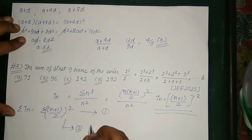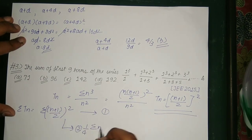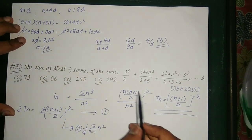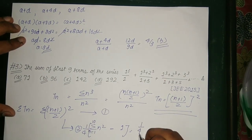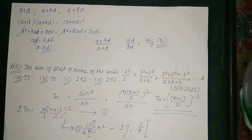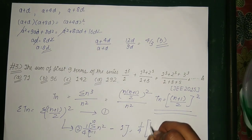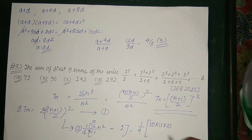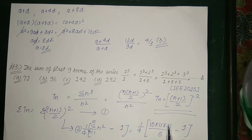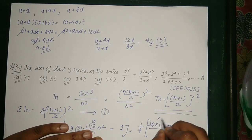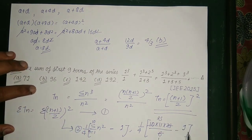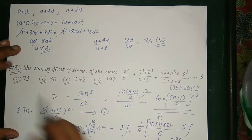The second approach is to write this as (1/4) × summation of (n+1)² from n=1 to 9, which equals (1/4) × summation of n² from n=1 to 10, minus 1. Using the formula n(n+1)(2n+1)/6 with n=10, we get 10 × 11 × 21 / 6 = 385, minus 1 = 384. So (1/4) × 384 = 96. The correct answer is option B: 96.